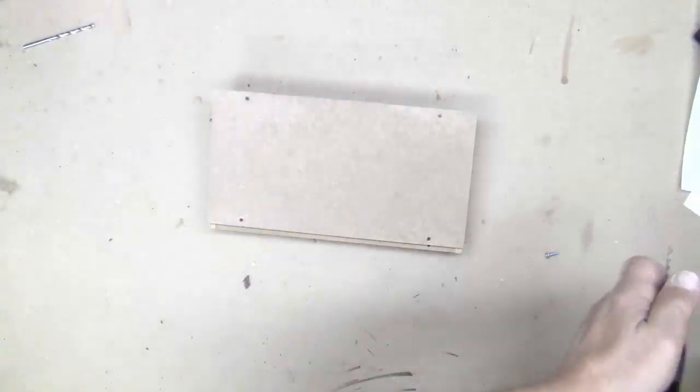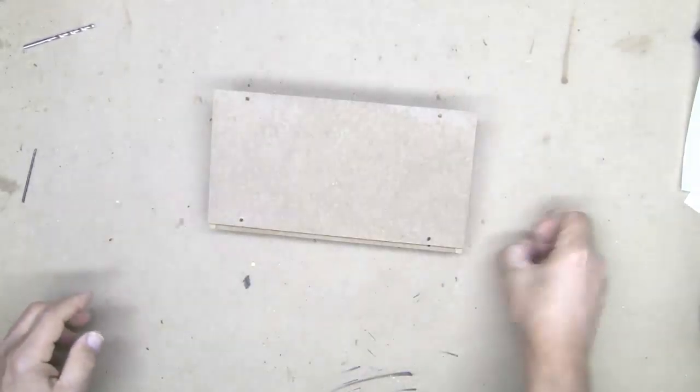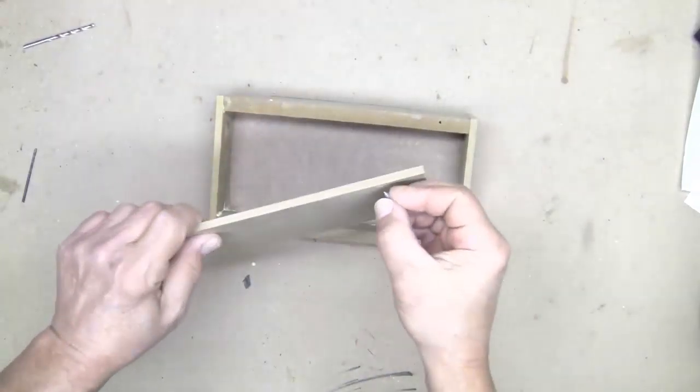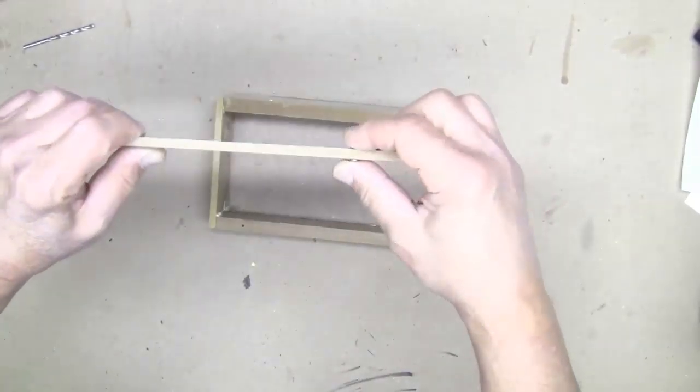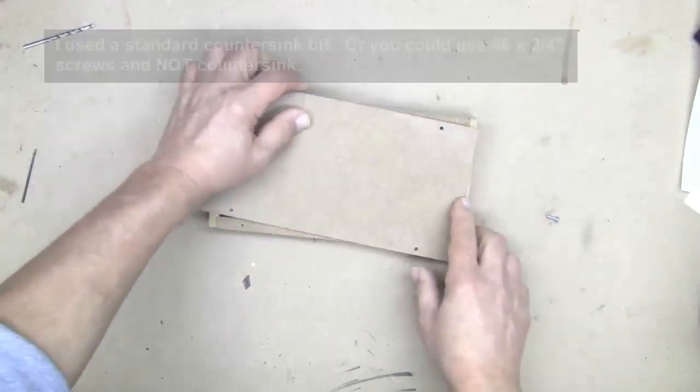Okay. Pilot holes are done. Now, I want to use a half inch screw, and this is already a quarter of an inch. So this is not going to bite in too much. So what I'm going to do is countersink these holes.